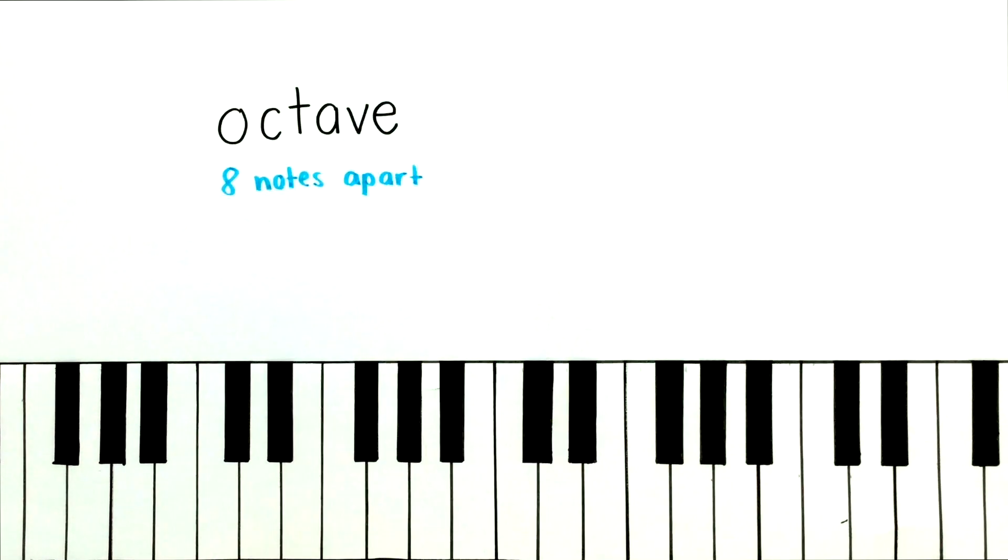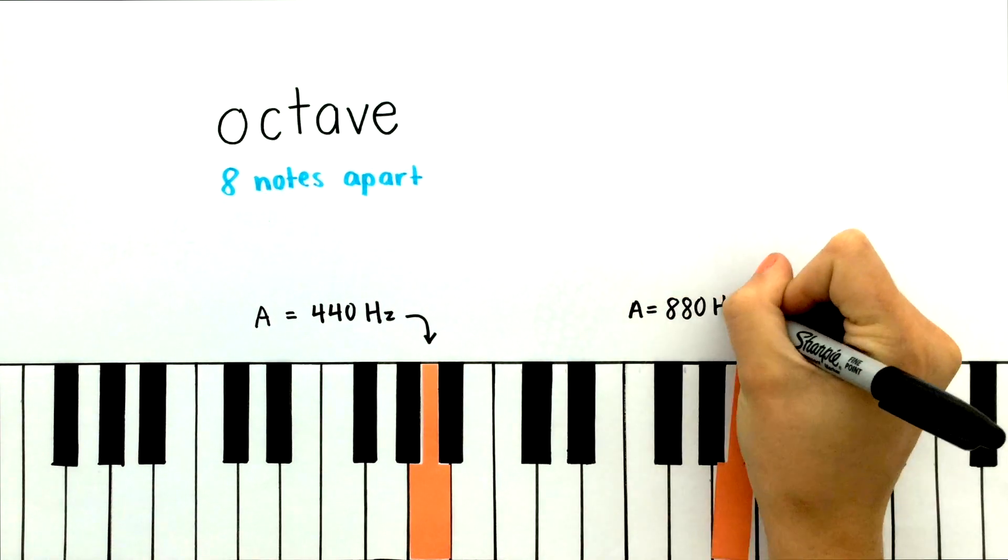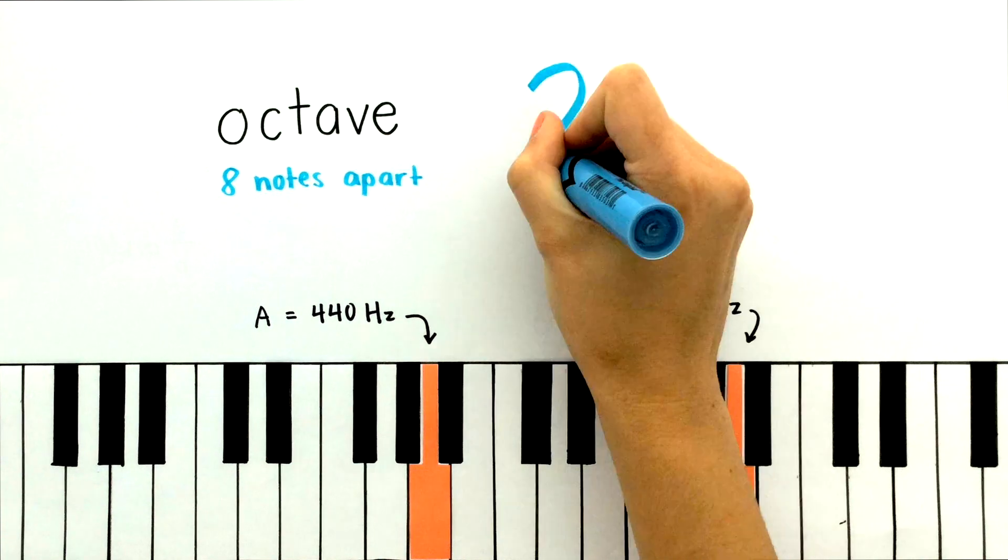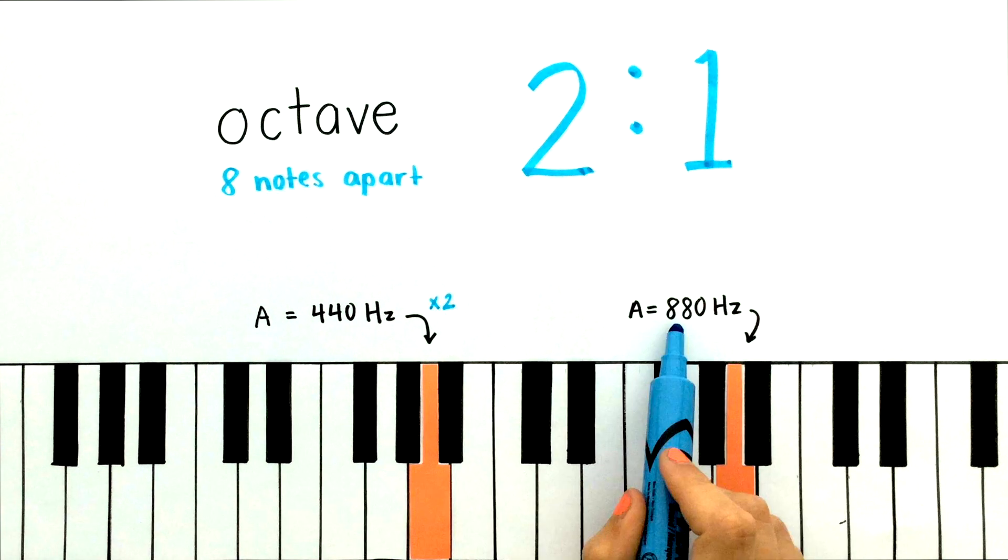An octave is 8 notes apart, and if we look at the frequency of note A, it's 440 Hz. The note A, an octave above it, has a frequency of 880 Hz. You can see that an octave has a 2 to 1 ratio, since if you multiply 440 by 2, you get 880.